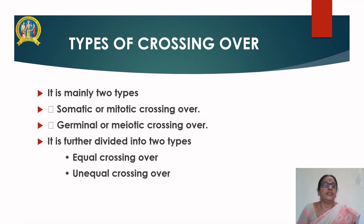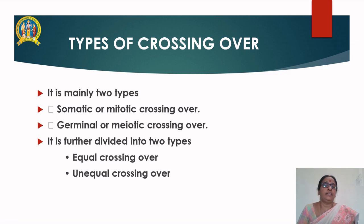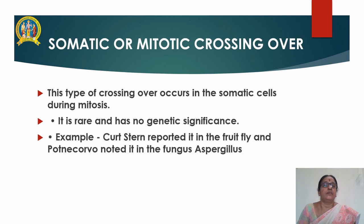Types of crossing over. Crossing over is mainly divided into two types: somatic or mitotic crossing over, and germinal or meiotic crossing over. This can be further divided into two types: equal crossing over and unequal crossing over.